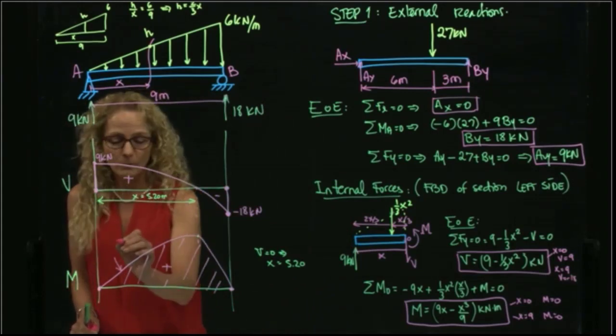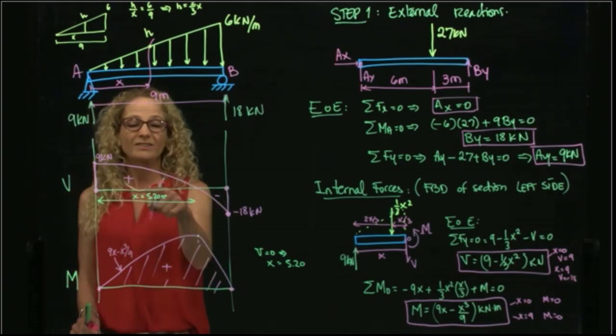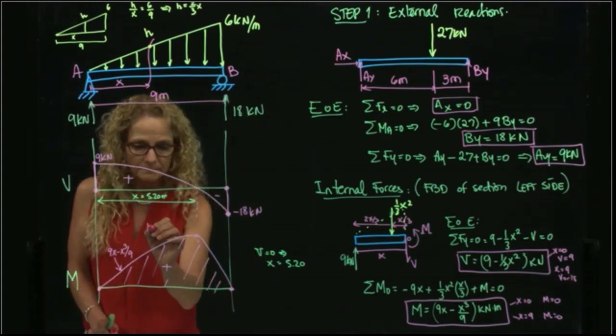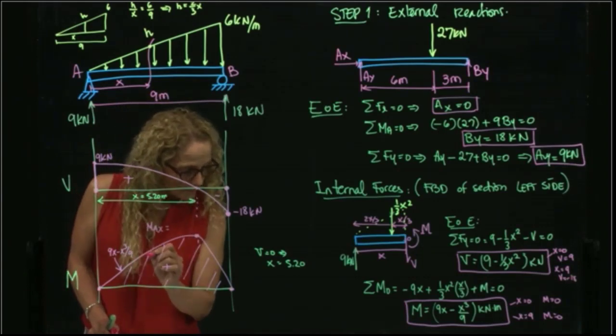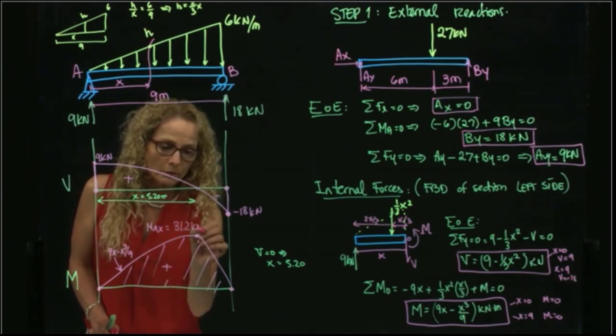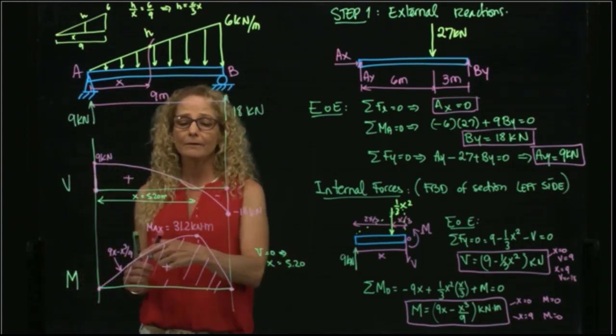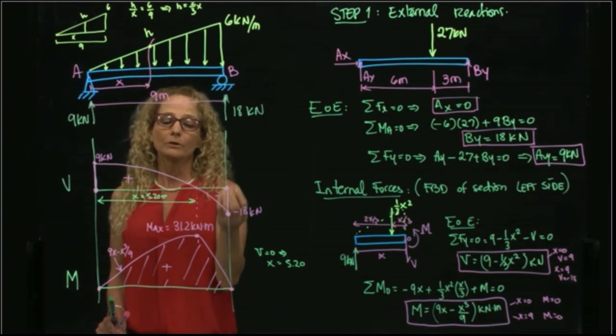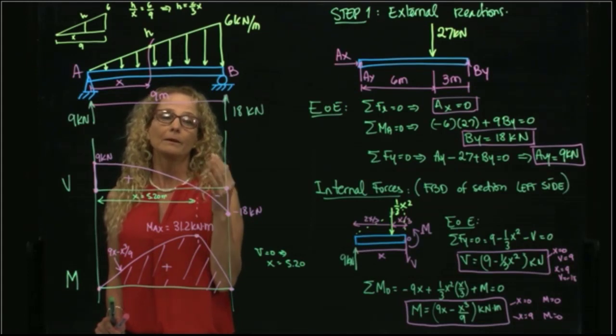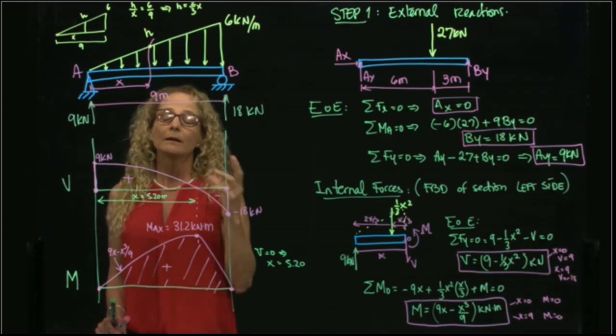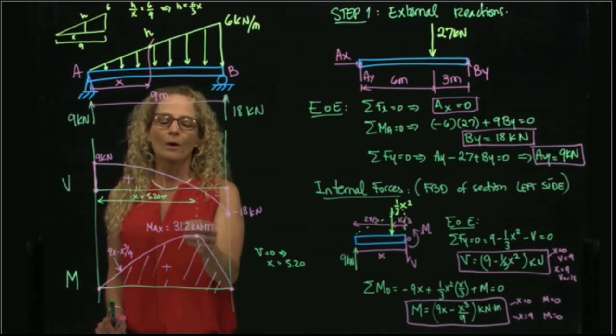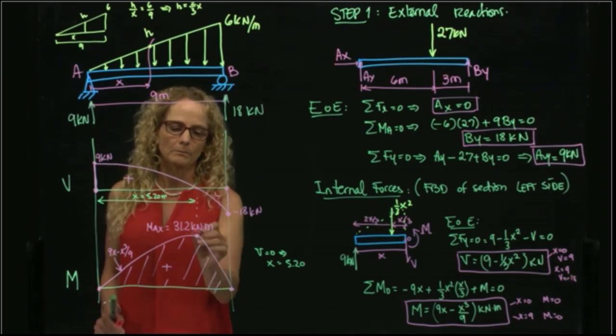It's a cubic, and we say that 9X minus X cubed over 9. And I plug this value in this equation, and I get this maximum. And the maximum value is 31.2 kilonewton meters. And why is that value important? Because when I am going to design the beam, I have to take the maximum load. And you will learn that in the next class that follows this class, that is Mechanics of Materials. But you need to know where the maximum is located, and what is the value of that maximum point.